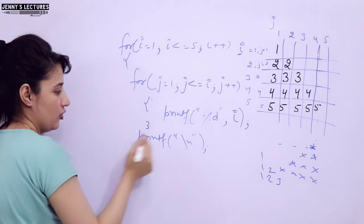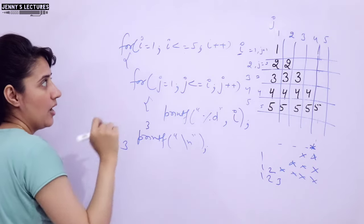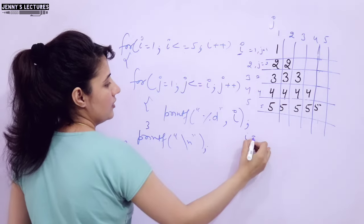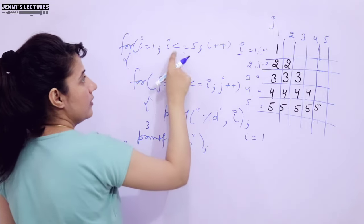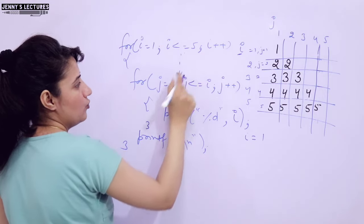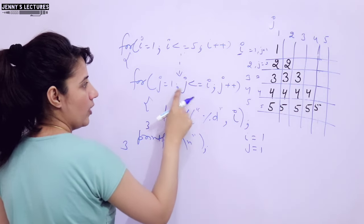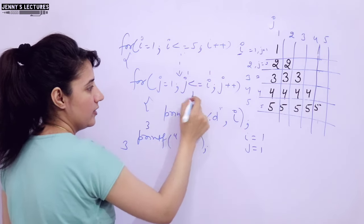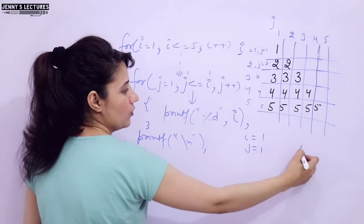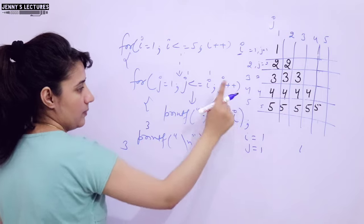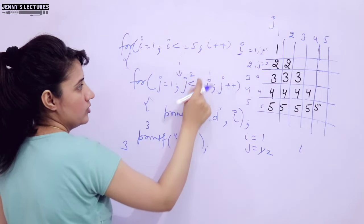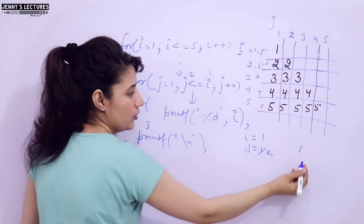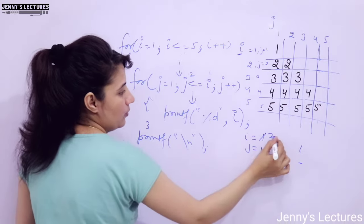Now slash n for new line, and that's it. Let's see how it will print. When i value is 1, i is 1 — 1 is less than equal to 5, condition true, we enter the loop. j value is 1. Now 1 less than equal to i, i value is 1, j is also 1 — condition true. We enter the inner loop. Print i, i value is 1, so 1 is printed. j plus plus, j becomes 2. Is 2 less than equal to 1? No — out of the inner loop. Slash n, cursor goes to the next line. i plus plus, i becomes 2.